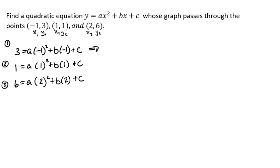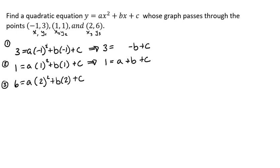From here we're going to go ahead and simplify. The first equation becomes three equals a minus b plus c. Actually, just a quick note — negative one squared is just one, so it should just be a, not negative a squared. Our second equation is one equals a plus b plus c.